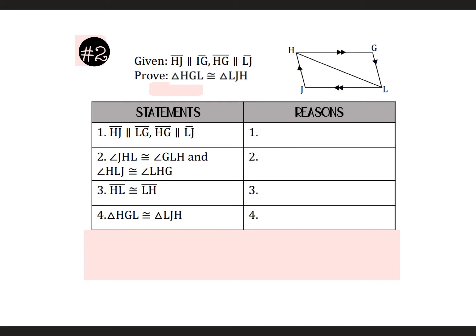For the second proof, reason number one should be given. Whenever you have parallel lines, you should know that you're marking angle pairs. So they say that angle JHL is congruent to angle GLH — that's this angle here — and is congruent to G, L, H.